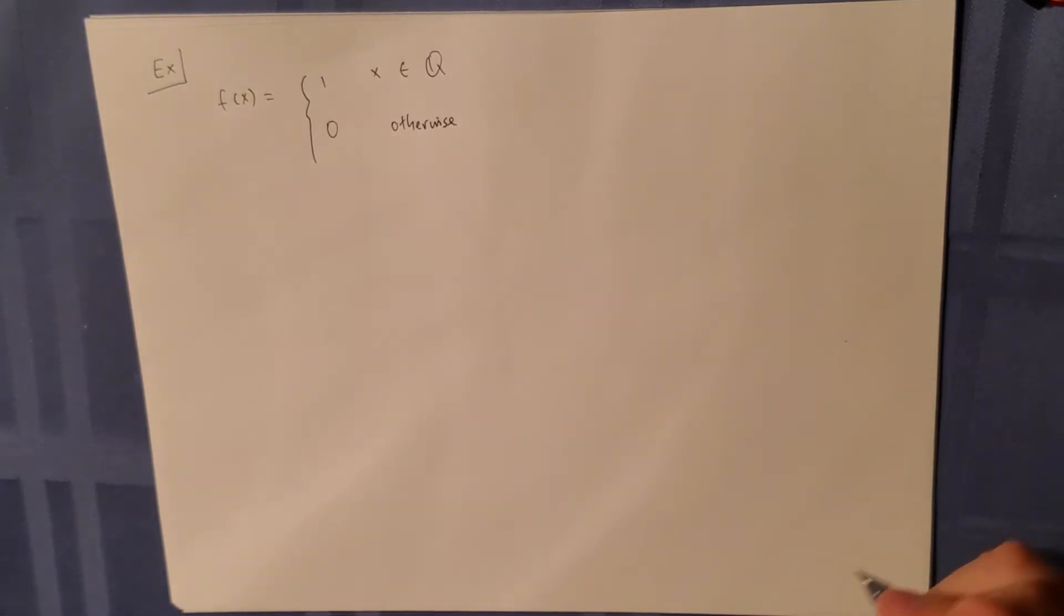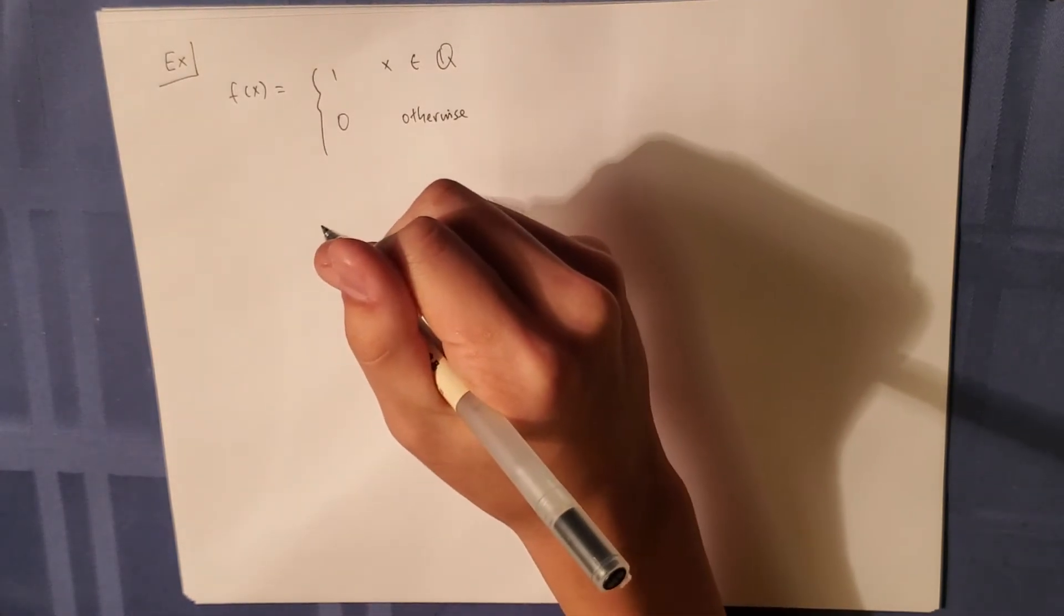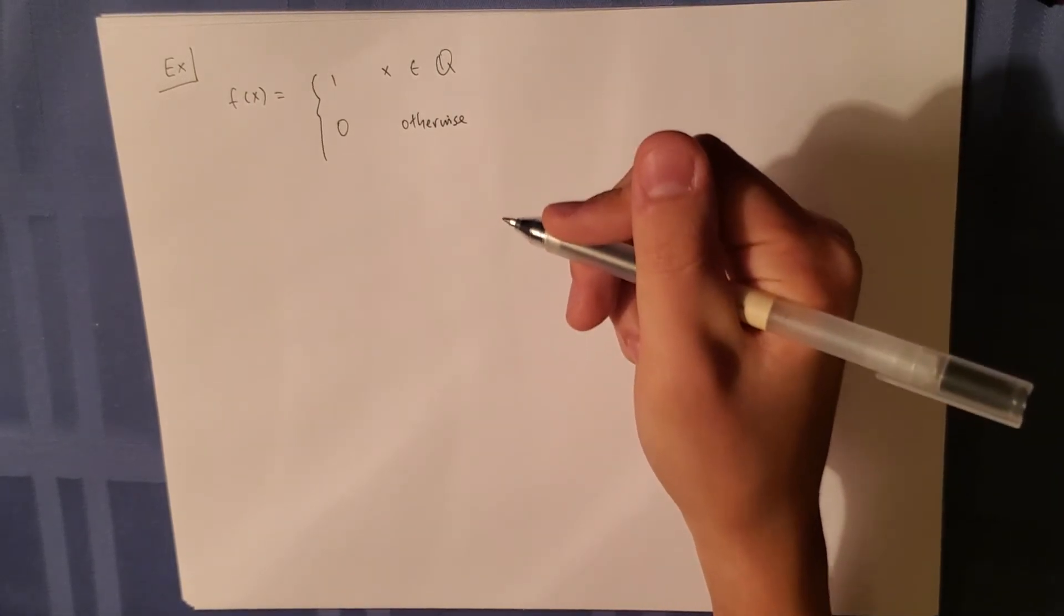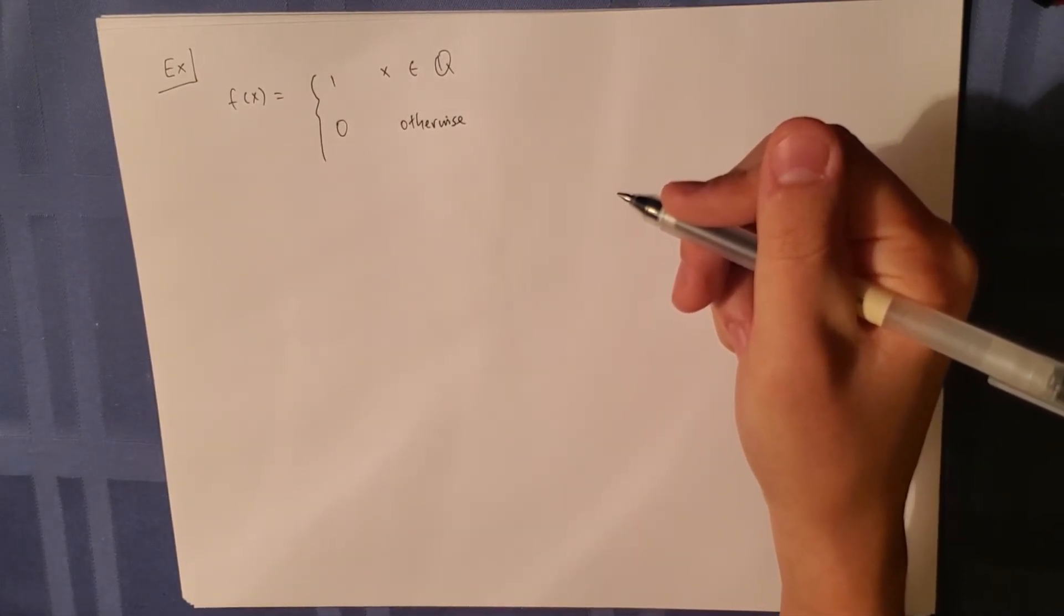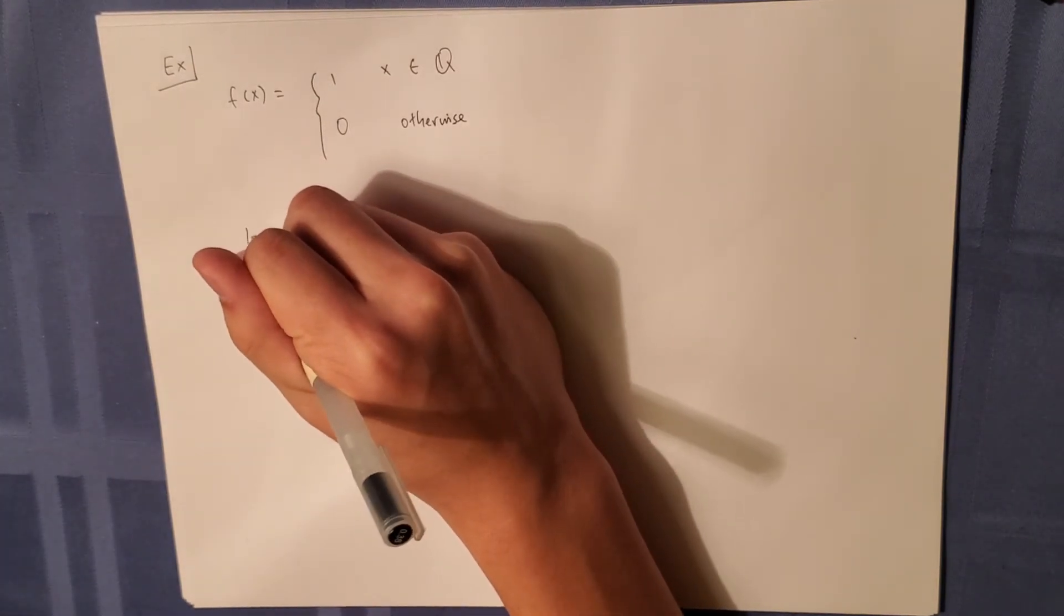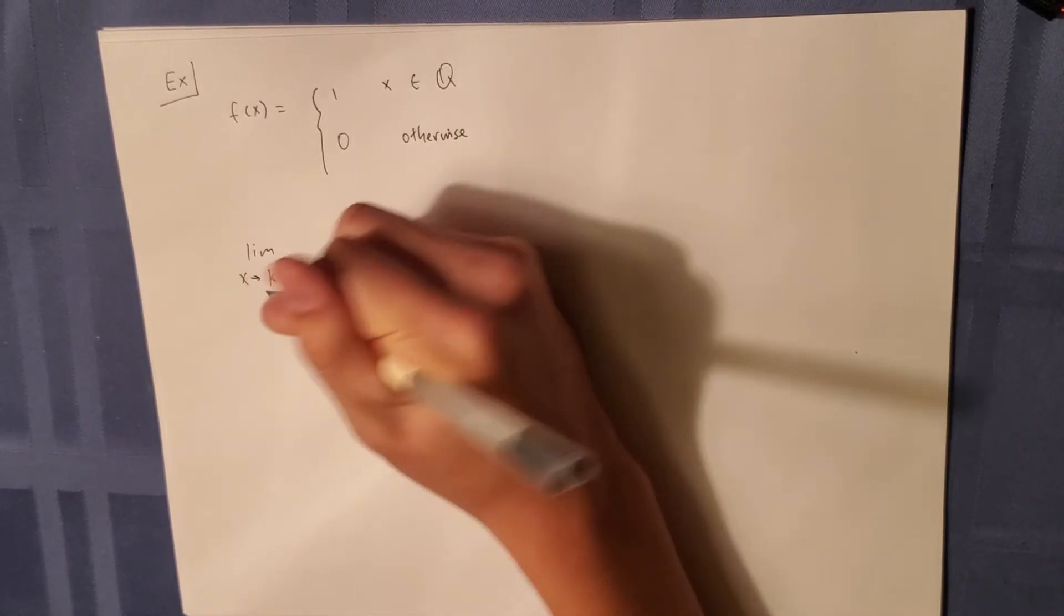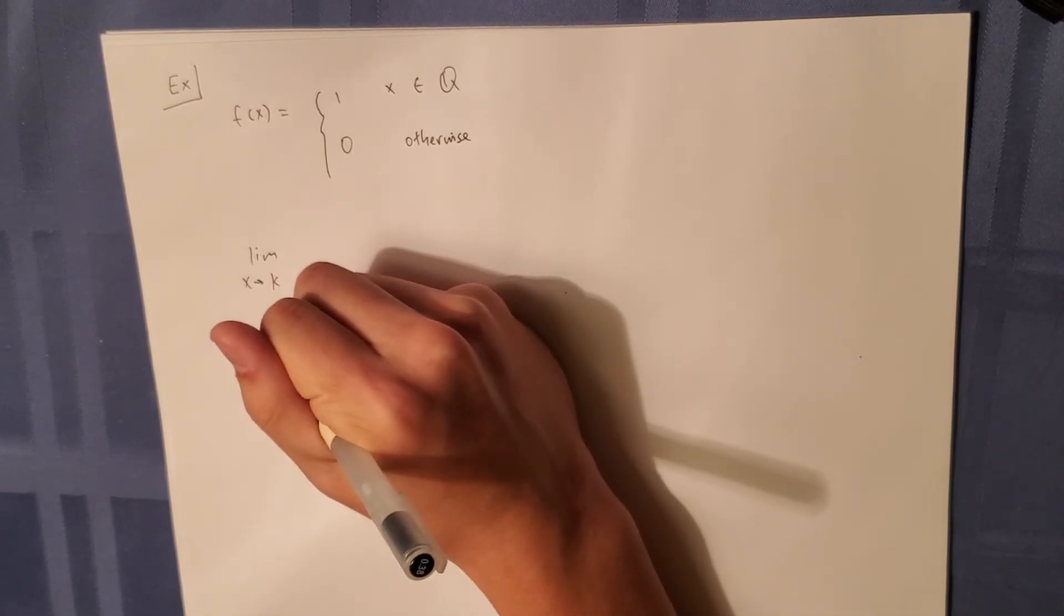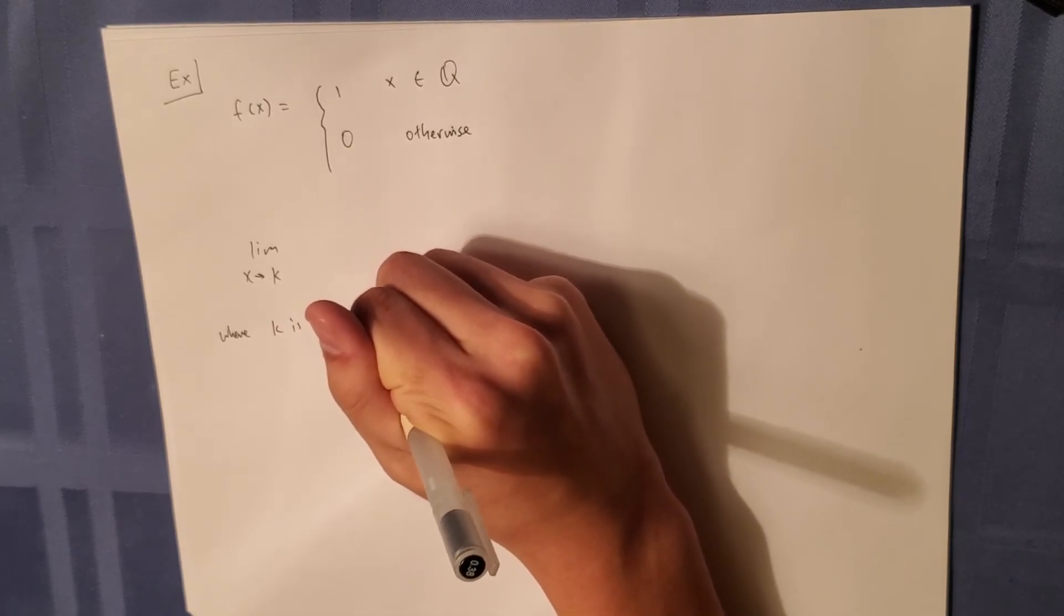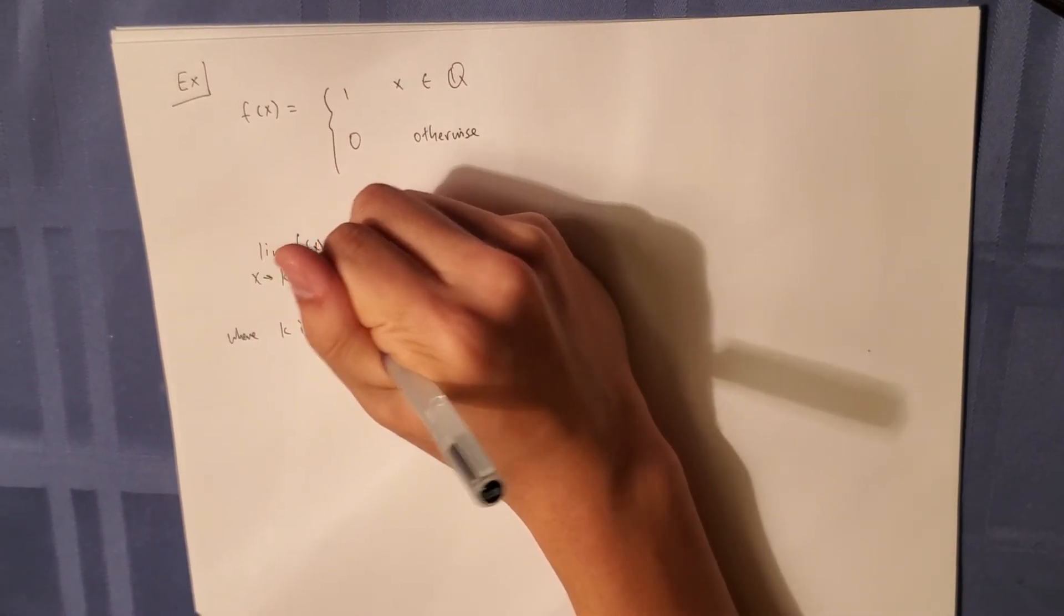So if we want to find the limit as x approaches an irrational number, the limit as x approaches k where k is irrational of f of x equals, well,